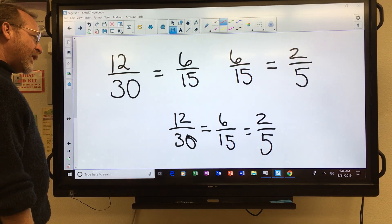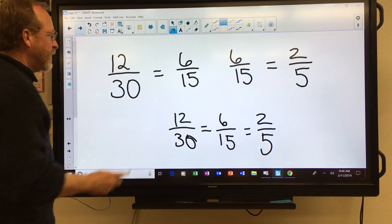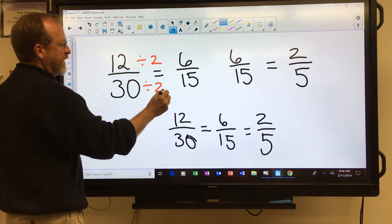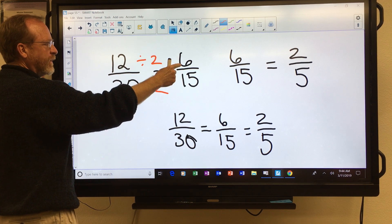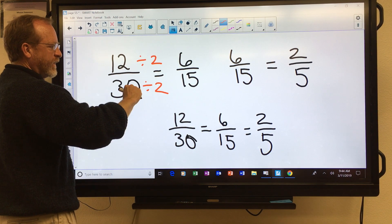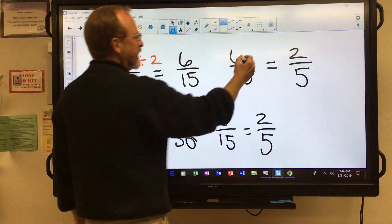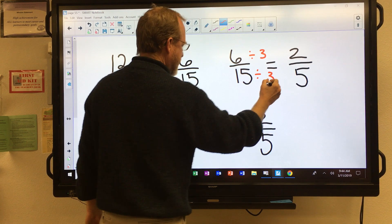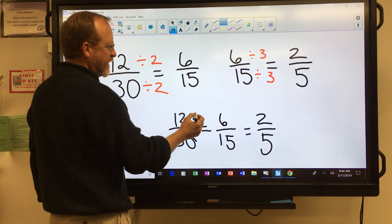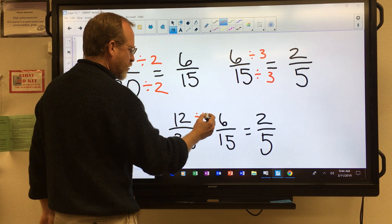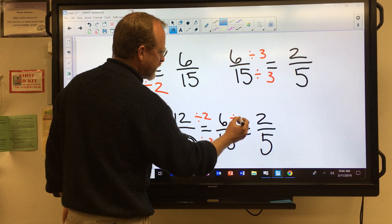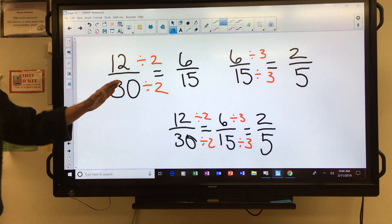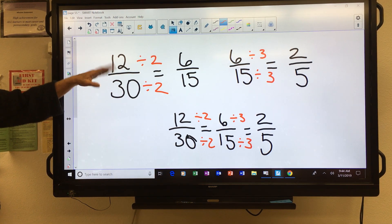Now, you can also go the opposite direction where you divide. And if you divide twelve by two, that will give you six. If you divide thirty by two, that will give you fifteen. If you divide by three, divide by three, you can see that you get an equivalent fraction. And it's totally cool to divide a fraction as long as you divide its same number top and bottom.